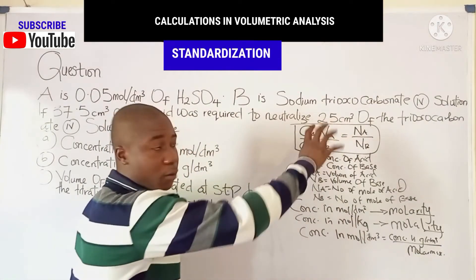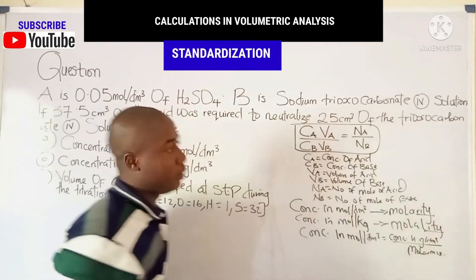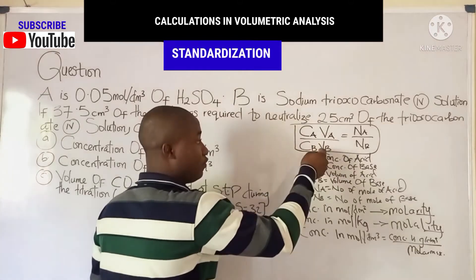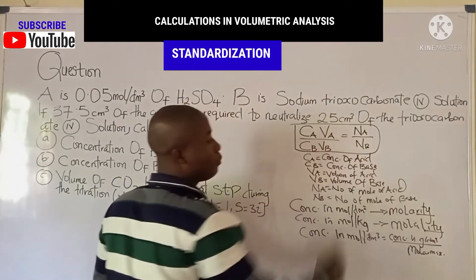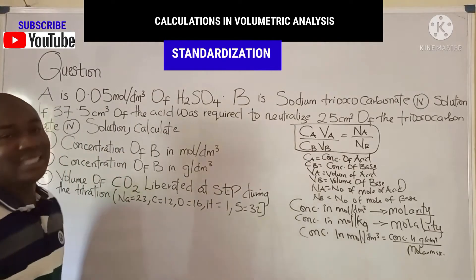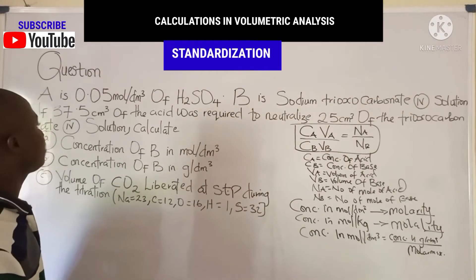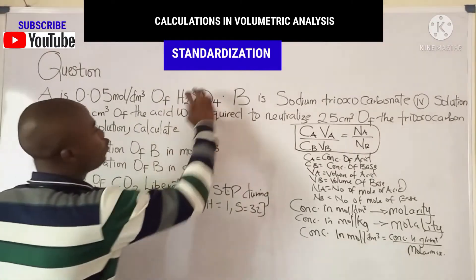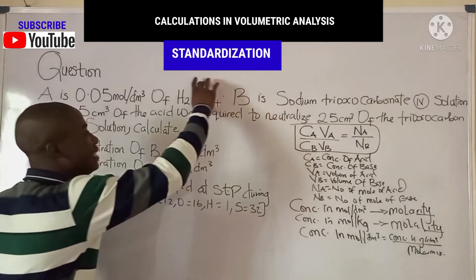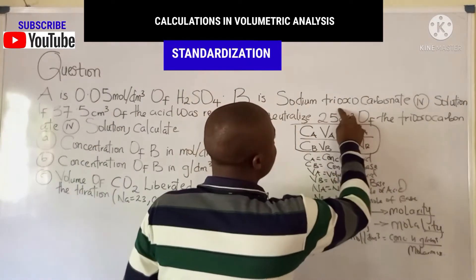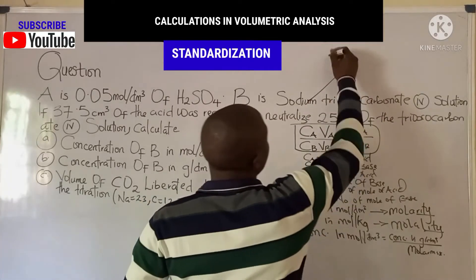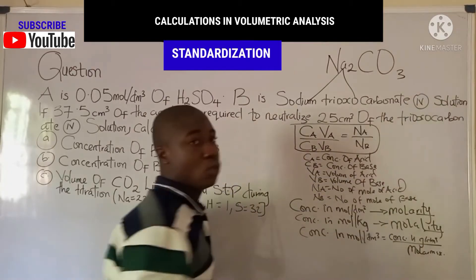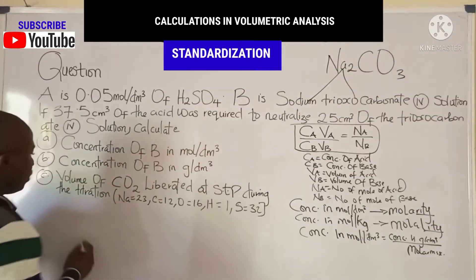Now let's analyze the question. We need to balance the equation: H₂SO₄ reacting with Na₂CO₃, also called soda ash, which is sodium trioxocarbonate(IV). Let's balance the equation.